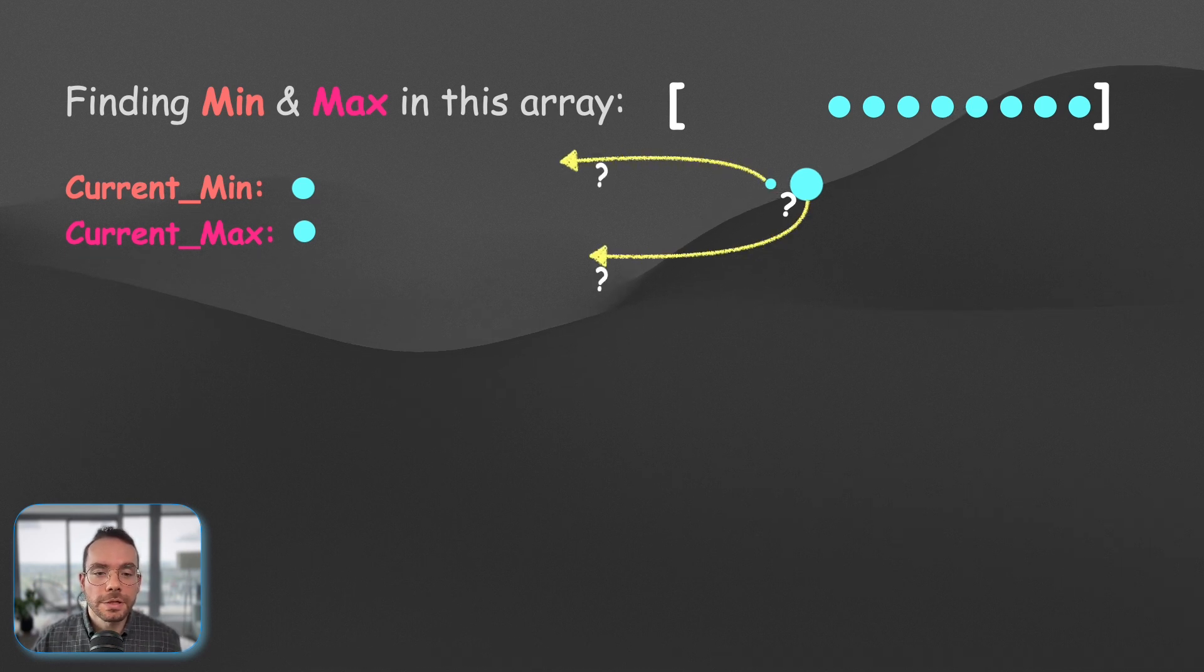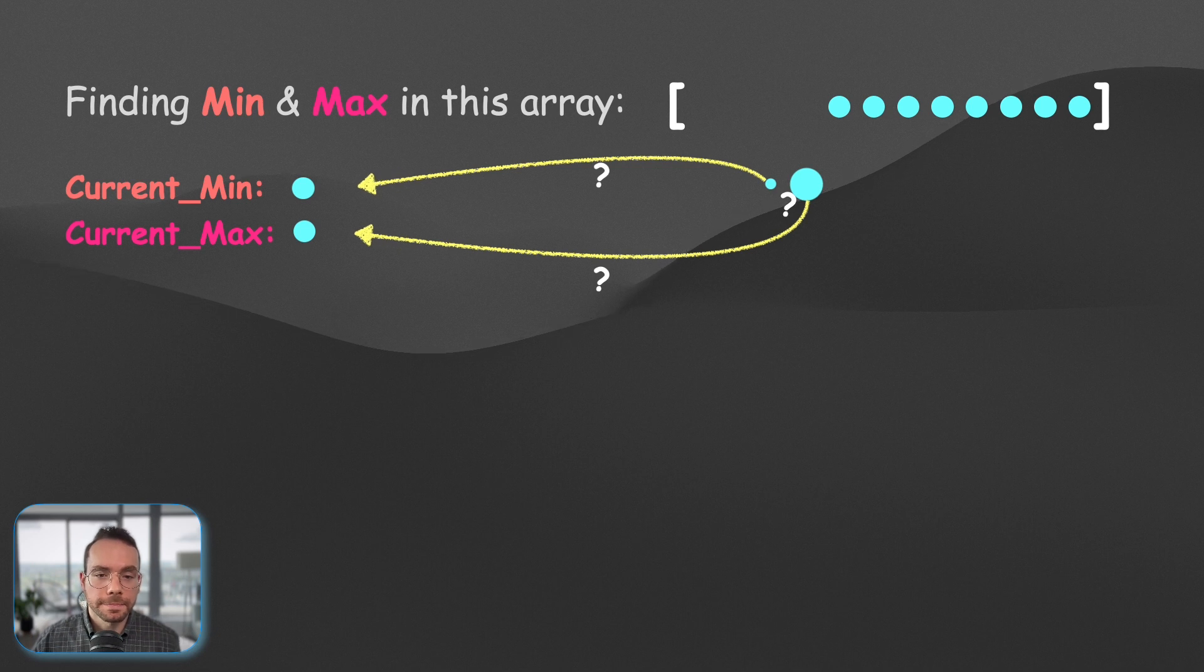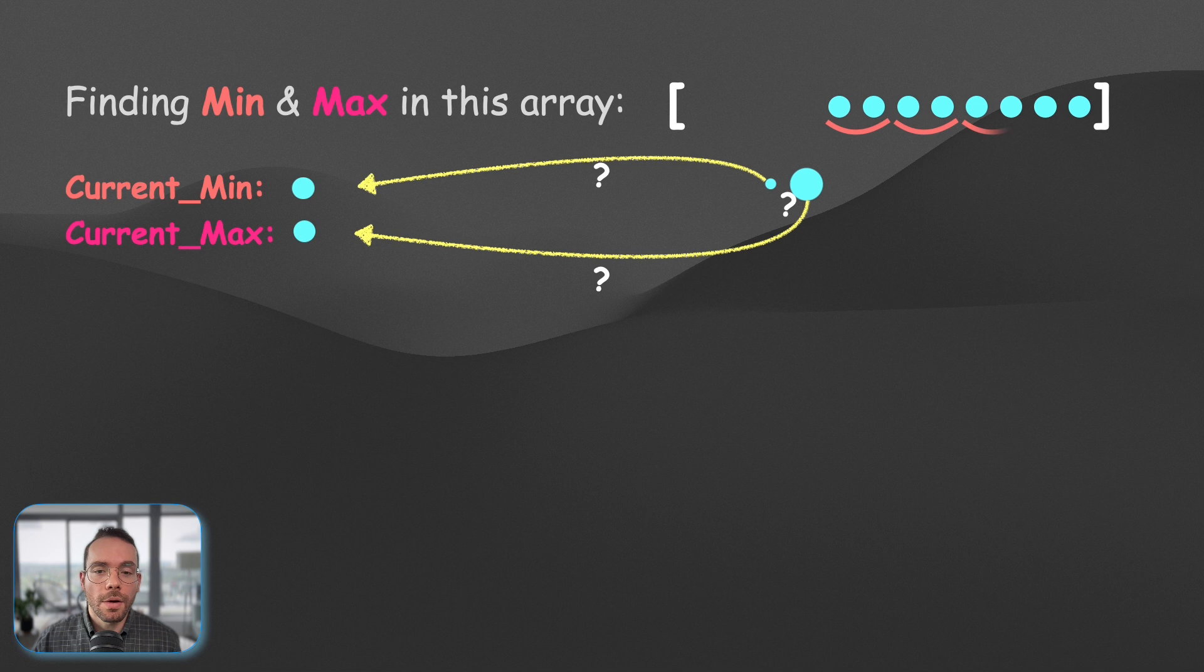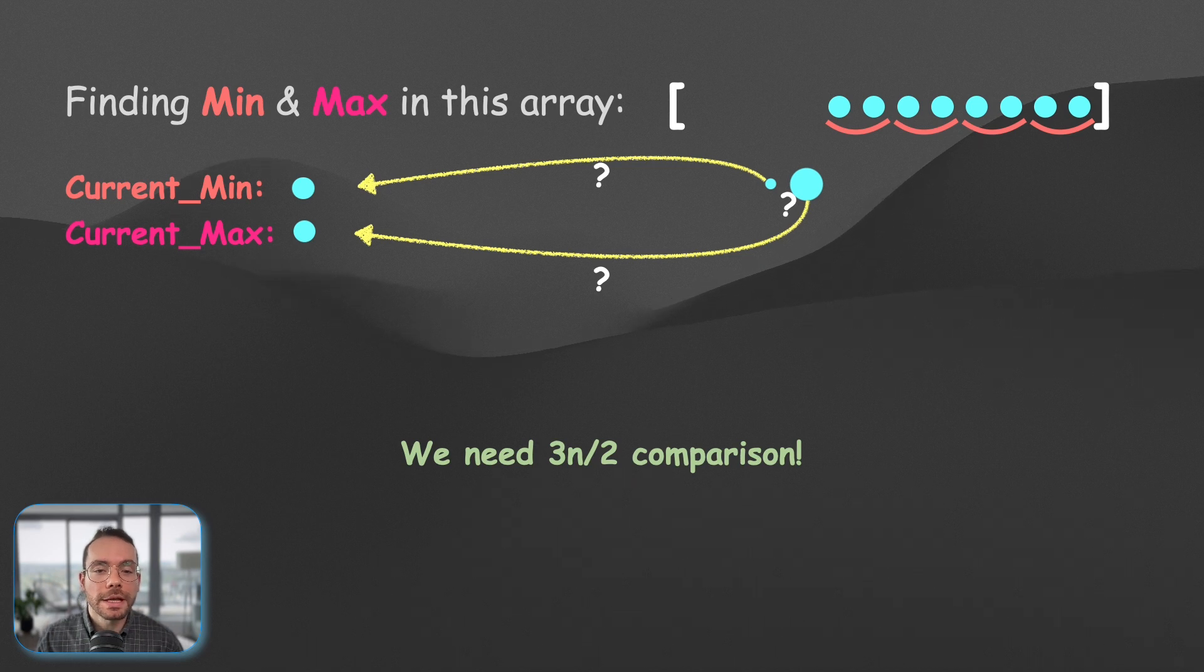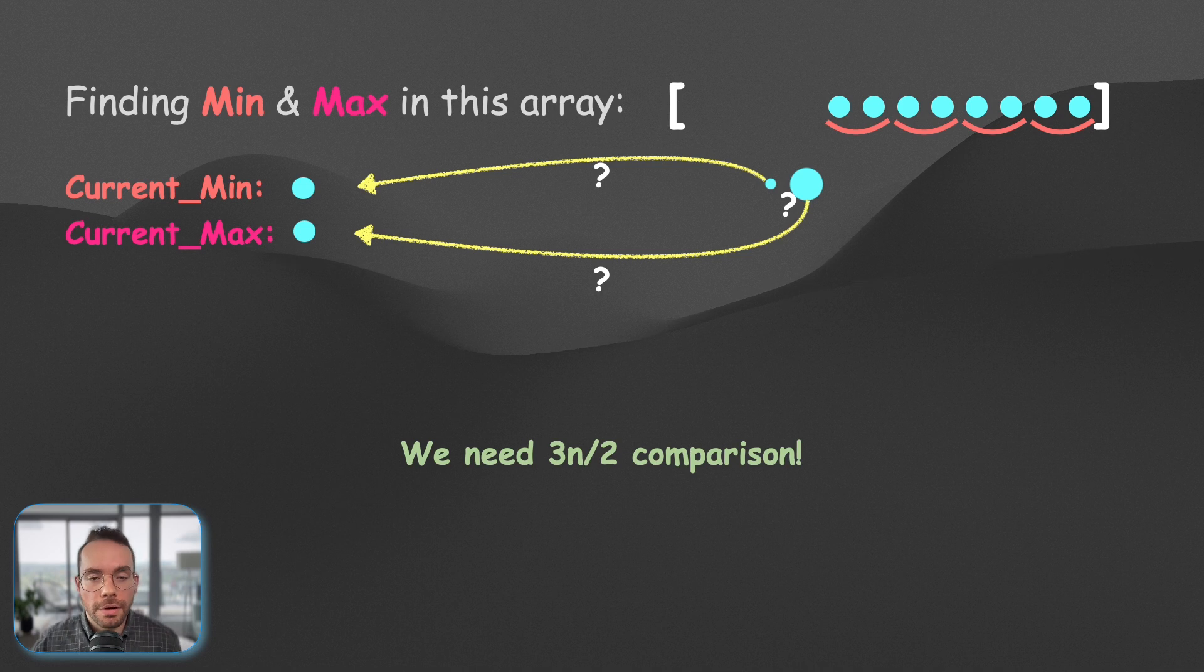So, any other comparison is going to be completely unnecessary, and we keep processing all the elements of this array pair by pair. Therefore, we will need three comparisons per two points of our array. So, that's going to give us 3n over 2 total number of comparisons.